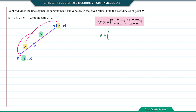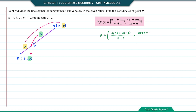The x-coordinate of point P will be 2 times 3 plus 3 times negative 7, divided by the total ratio which is 3 plus 2. For the y-coordinate, it will be 2 times 7 plus 3 times 2, divided by the total ratio. This equals negative 15 over 5 and 20 over 5. Simplifying, you get negative 3 and 4. Therefore, the coordinate of P is (negative 3, 4).